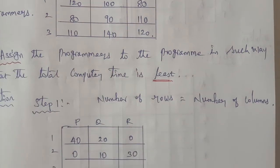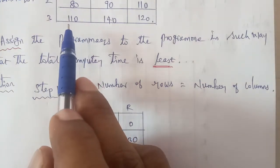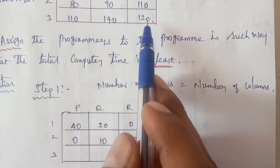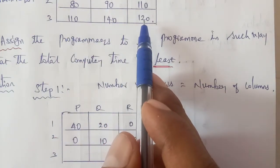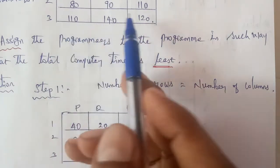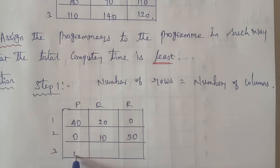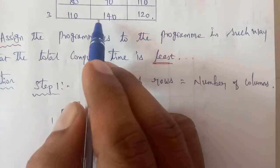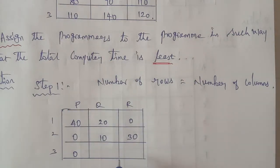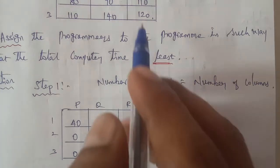Third row, the least number is 110, 140, 120. So least number is 110 and subtract. 110 minus 110 is 0. Next is 140 minus 110 is 30. 120 minus 110 is 10.